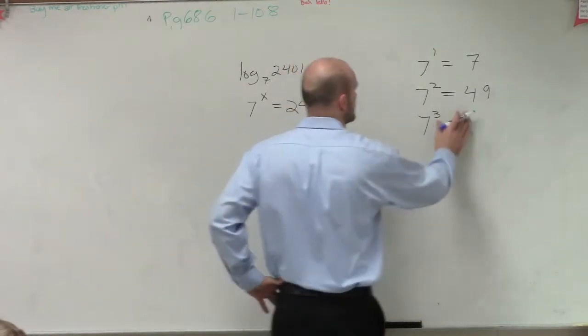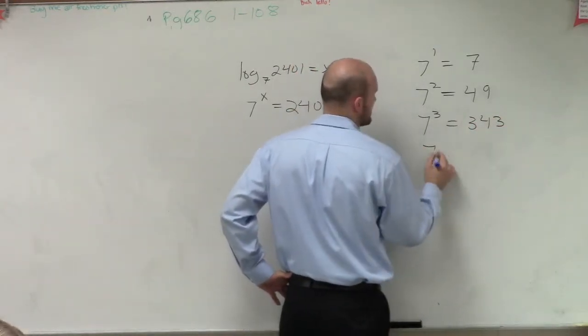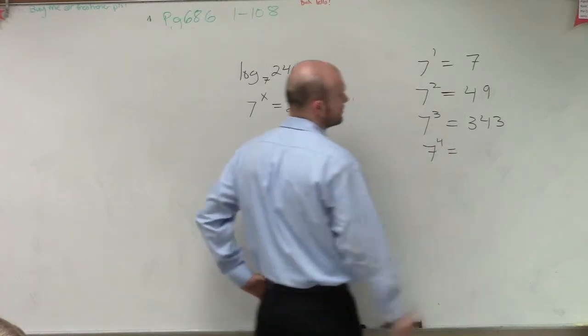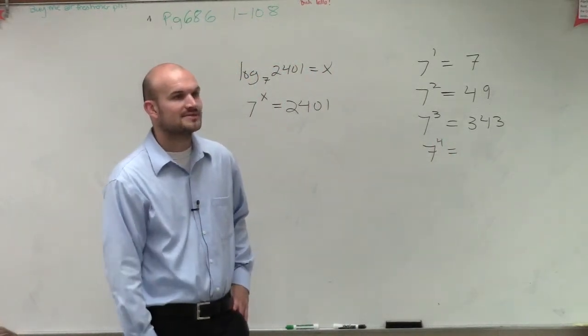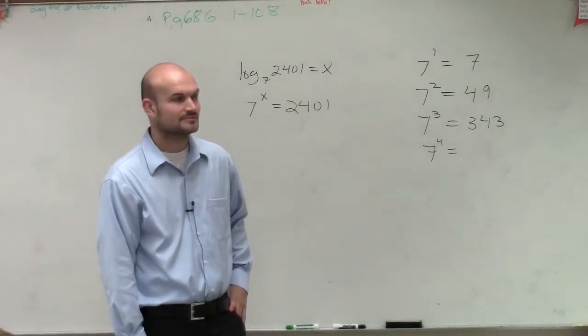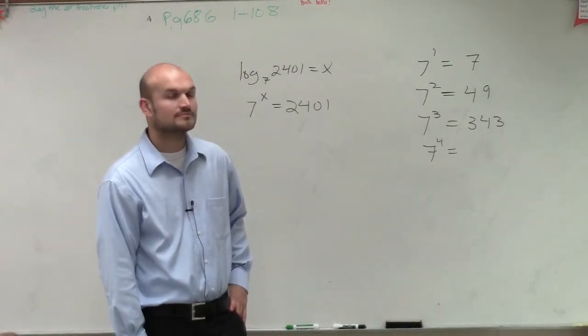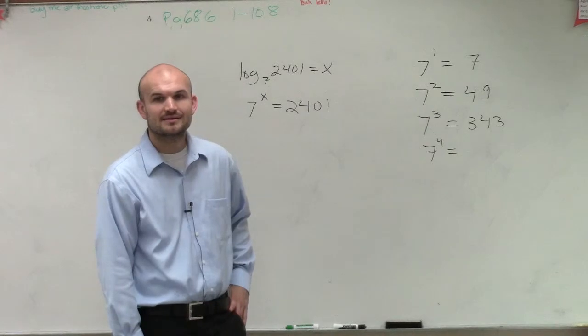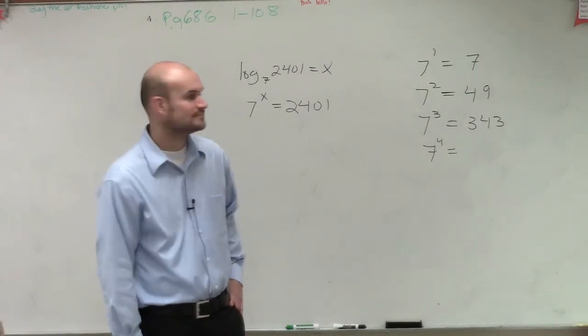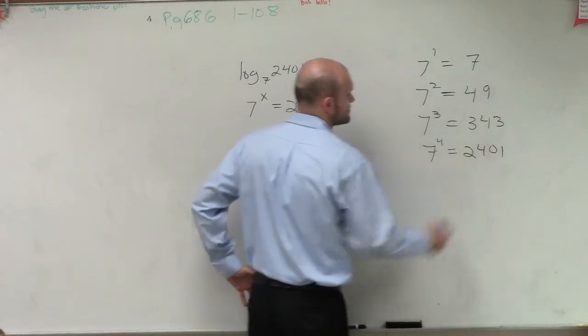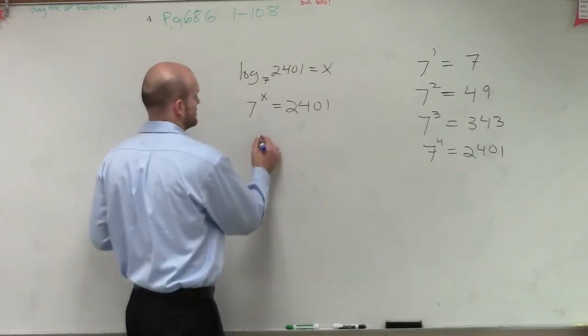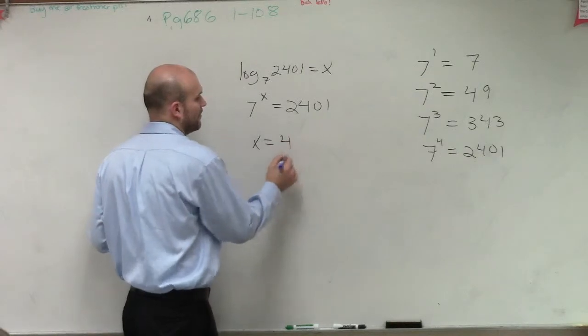OK. So, now let's do 7 to the fourth. So, 7 times 7 times 7 times 7. Dun, dun, dun, dun, dun, dun. Like, 2,000 plus 1 times 4. Oh, what do you know? So therefore, we can say x equals 4.